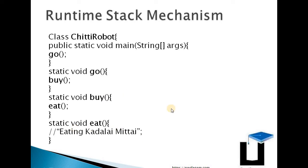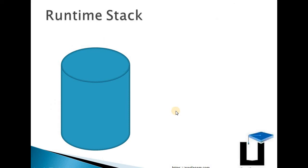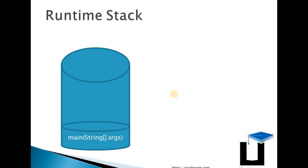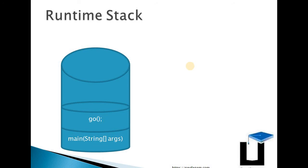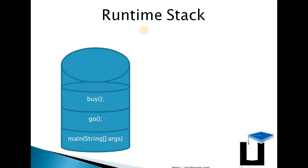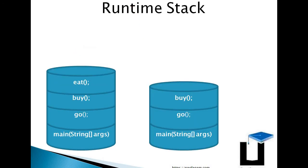How does the JVM maintain these methods in the stack? This is our runtime stack. The first thing is the main method — MTR (main thread runner) is the first method. When the main method calls go, and go calls buy, and buy calls eat, each method is pushed onto the runtime stack as an activation record. The JVM compiler begins to keep track of the robot's method calls.